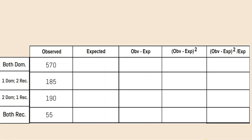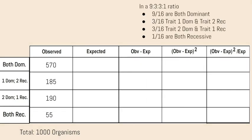From there, we have to calculate our expected values. We do so by first counting our total number of organisms, which is 1,000. In the 9 to 3 to 3 to 1 ratio, we know that 9 out of 16 of the 1,000 plants will be dominant for both traits, which is 563. 3 out of 16 of the 1,000 plants will be dominant for trait 1, but recessive for trait 2, leading to 188. Again, another 3 out of 16 of the 1,000 plants will be dominant, however now for trait 2 and recessive for trait 1, leading again to 188. And only 1 out of every 16 plants of the total of 1,000 will be recessive for both traits, leading to 63.